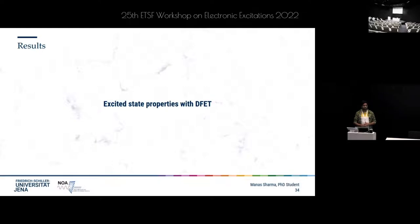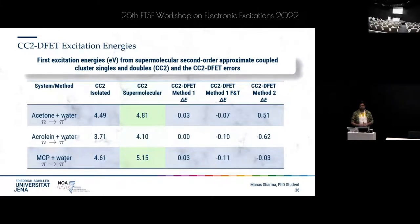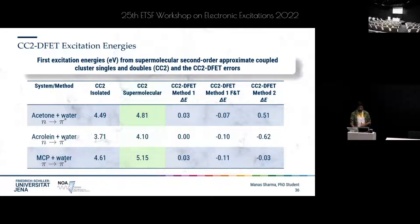Coming to excited state properties: I will show results obtained with CC2 coupled with DFET and with RTTDDFT coupled with DFET. For CC2 with DFET, we use solvated molecules like acetone, methylenecyclopropene, or acrolein in water. The green column shows the first excitation energy of the total system using CC2, and the remaining columns show errors for the different methods. Method 1 gives a maximum error of just 0.03 eV, which is quite good. Method 1 with freeze-and-thaw gives a somewhat larger error, indicating beneficial error cancellation earlier. Method 2 performs worst with a large error of 0.62 eV, as the embedding potential construction was simplistic and violated some underlying principles.